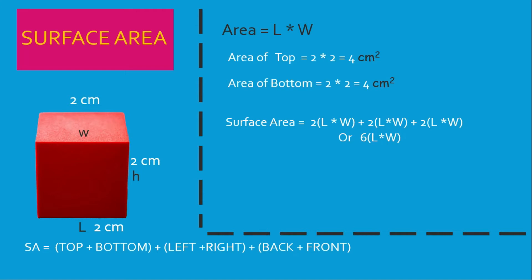Now getting into the main calculation — finding the surface area for the entire cube. We could find the length times width of the top, bottom, left, right, front, or back individually. But what we've done instead is find the area of one side and multiply by two, find the area of another side and multiply by two, and find the area of another side and multiply by two. So we find the top multiplied by two to get top and bottom, the left multiplied by two to get left and right, and the front multiplied by two to get front and back.